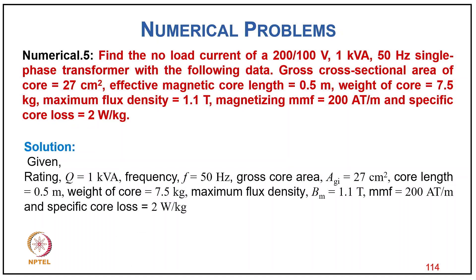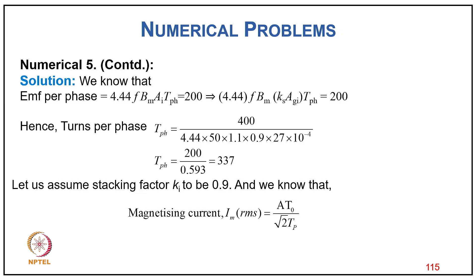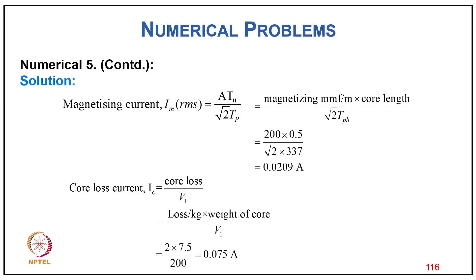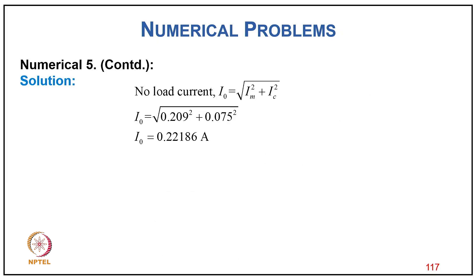Numerical problem 5: Find no-load current of a 200/100 V, 1 kVA single-phase transformer with: gross cross-section 27 cm², effective magnetic length 0.5 m, core width 7.5 cm, maximum flux density 1.51 T, magnetizing MMF 200 AT/m, specific core loss 2 W/kg. From E = 4.44×f×Bm×Ai×Tp: primary turns Tp = 37 (with stacking factor Ai×0.9). Magnetizing current Im = AT₀/(√2×Tp) = 0.0209 A. Core loss component Ic = (2×7.5)/200 = 0.075 A. No-load current I₀ = √(Im²+Ic²) = 0.2186 A.